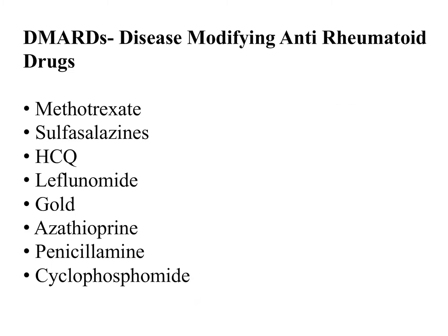The main treatment — the keystone — is the disease-modifying anti-rheumatoid drugs (DMARDs). We have 8 drugs in this category: the upper 4 are commonly used, while the lower 4 (gold, azathioprine, penicillamine, cyclophosphamide) are rarely used. The commonly used DMARDs are methotrexate — the first-line and anchor drug — sulfasalazine, hydroxychloroquine, and leflunomide.